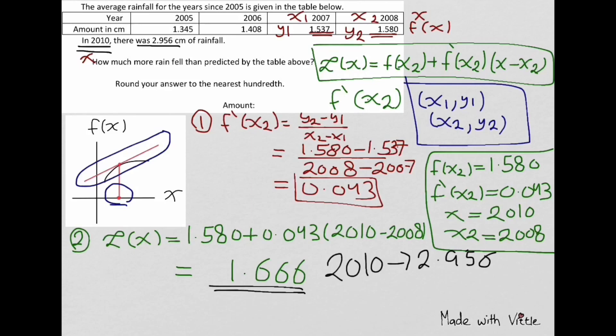To find the added amount, we will subtract this value from the actual one. So 2.956 minus 1.666, we will get 1.29, which is to the nearest hundredth. So the amount of rain is 1.29.